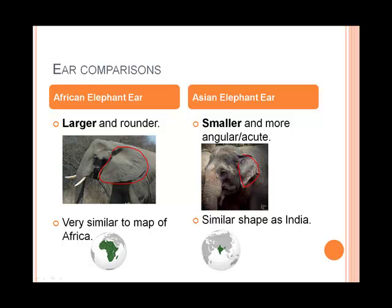Funnily enough, the ear shape of the African elephant is also very similar to the Africa map, and the Asian elephant has an ear shape that is similar to that of India.